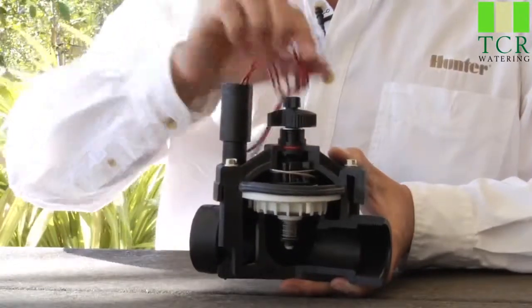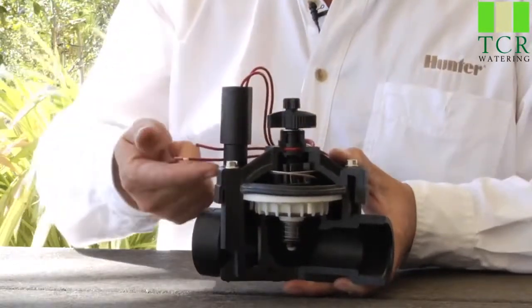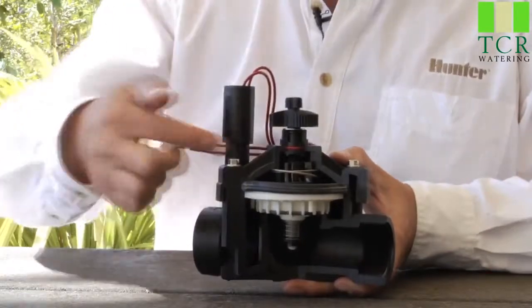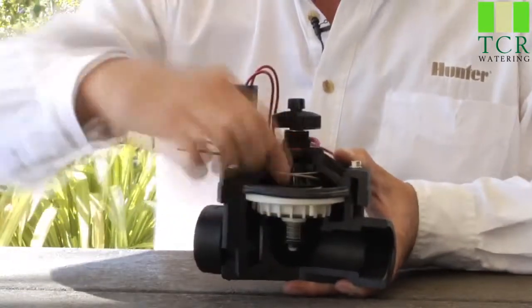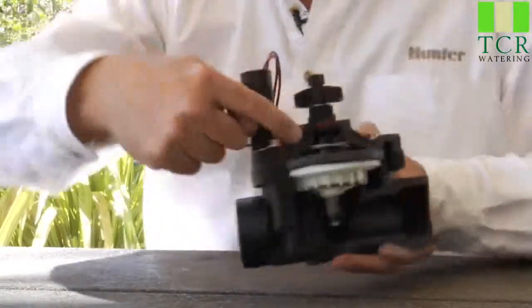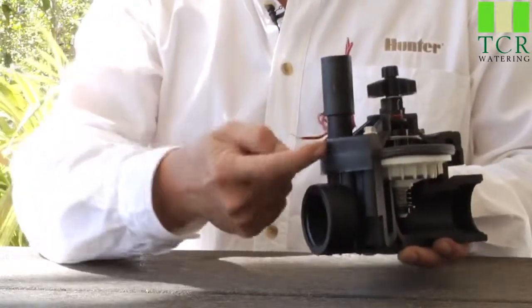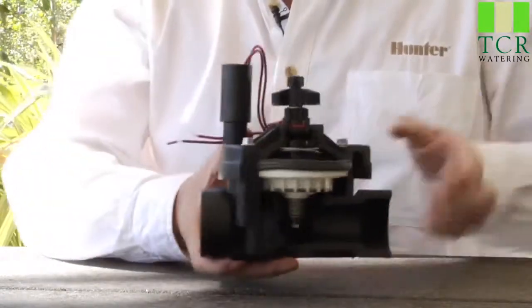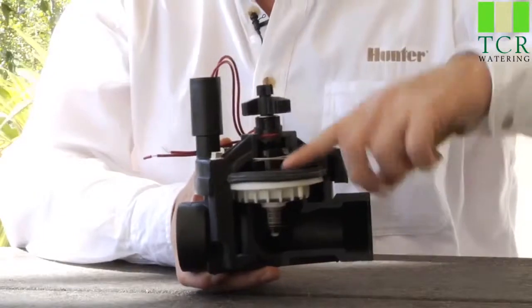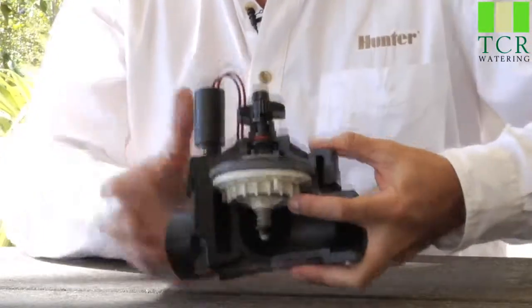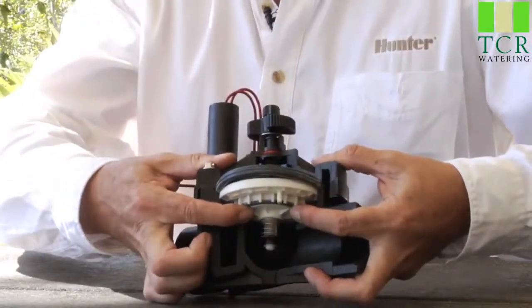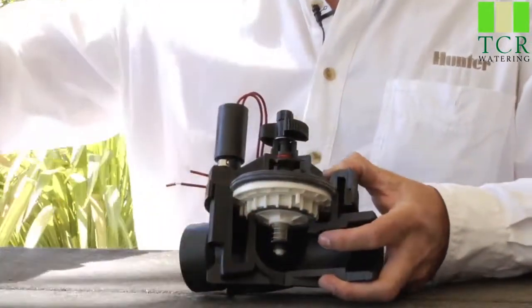When the controller turns on the valve electrically, the plunger raises up, and the pressure and water that sits on top of the diaphragm is allowed to escape down the exhaust port and downstream. Once that water escapes, the pressure here drops, and it allows this diaphragm to move upwards off of its seat, allowing the water to escape downstream to the heads.